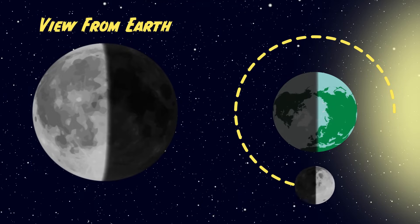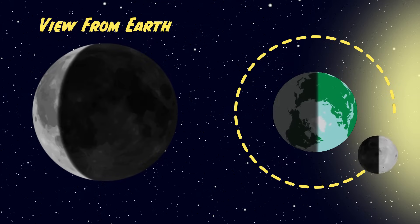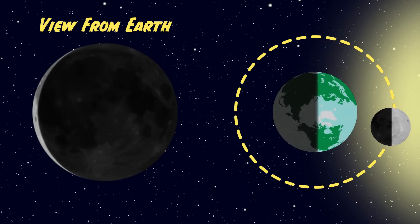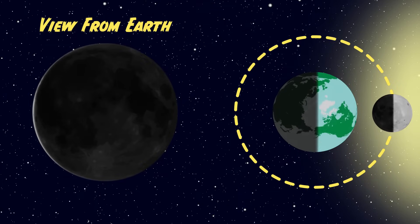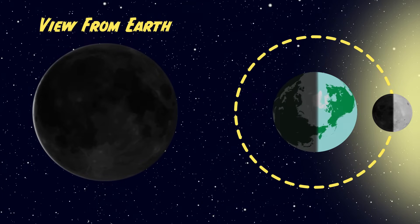This means that we see different amounts of the moon lit up and in darkness every day. And because the moon is a sphere, we end up seeing some pretty cool shapes. Let's look at this in more detail.